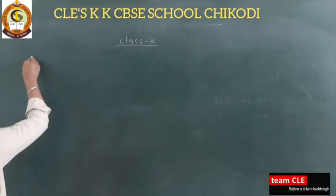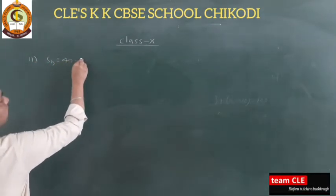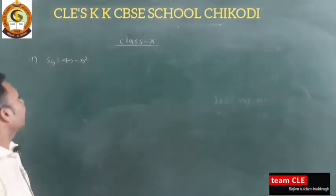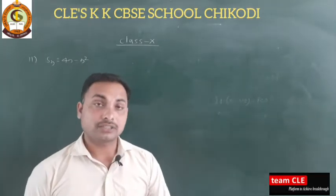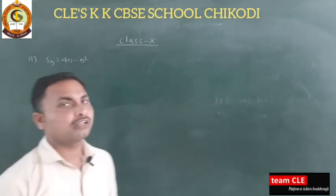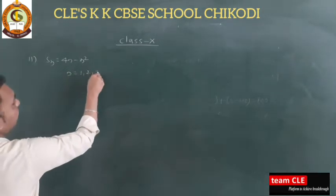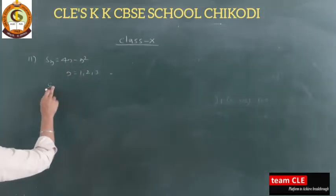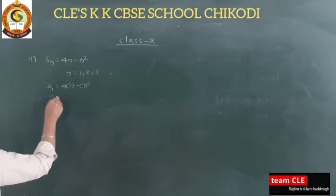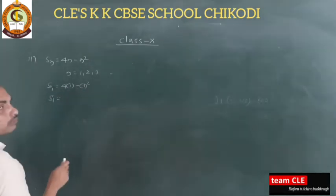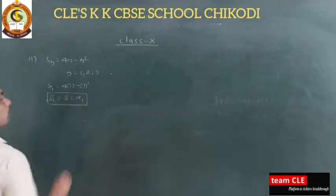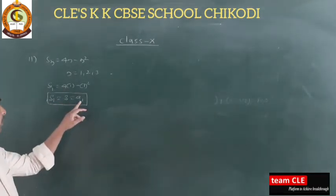We are given the sum Sₙ = 4n − n². We need to find the first term, second term, and nth term including the tenth term. Substituting n = 1: S₁ = 4×1 − 1² = 4 − 1 = 3. So S₁ = a₁ = 3. The first term a₁ is 3.